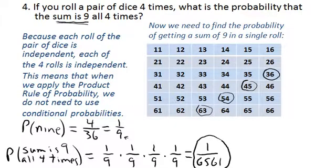But in any case, the probability of the sum is 9 all four times is 1 over 6,561.